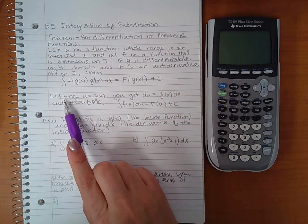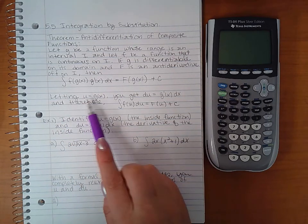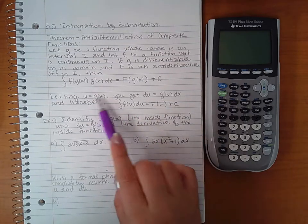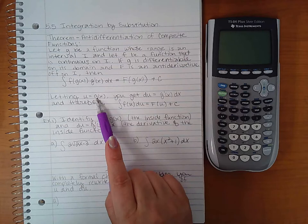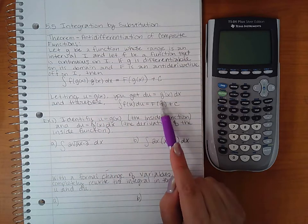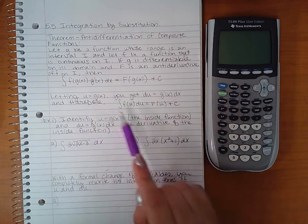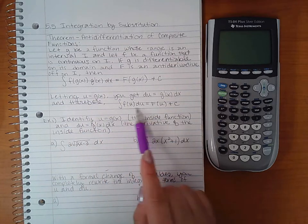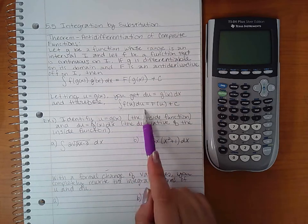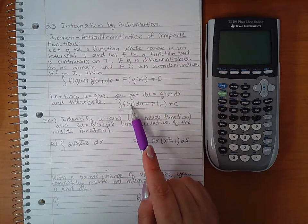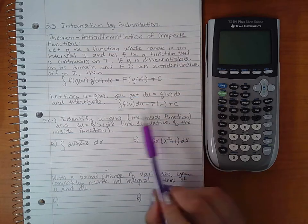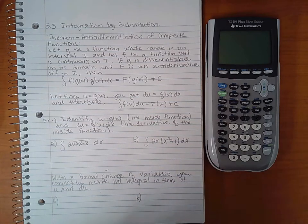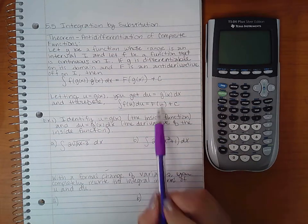The way we do this problem is we substitute. We say let u equal the inner function g of x, and then if you differentiate this equation, the derivative of u is du and the derivative of g of x is g prime of x dx. Therefore, this integral can be turned into this integral where you just have only one variable, one independent variable being u this time. So when you take the anti-derivative of this, you get capital F of u plus c, and then you just have to back substitute and plug g of x back into there.